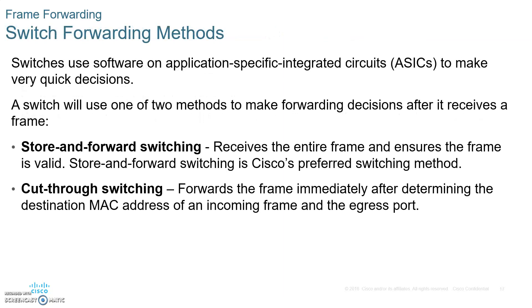Now let's get into the forwarding methods. There are two forwarding methods. First is store-and-forward: it stores the incoming frame to check it for errors, using the frame check sequence on the frame to verify integrity. But that creates latency — delay — because you have to store the frame before checking for errors. The second is cut-through switching: the frame is forwarded as quickly as possible to the destination with no error checking. The type of cut-through that does this is called fast-forward.